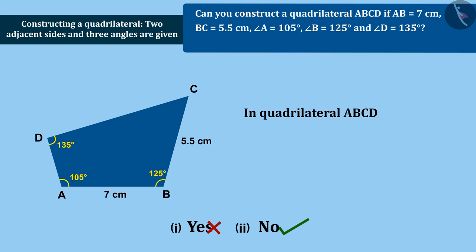In quadrilateral ABCD, angle A equals 105 degrees, angle B equals 125 degrees, angle D equals 135 degrees. Angle A plus angle B plus angle D equals 105 degrees plus 125 degrees plus 135 degrees.